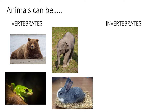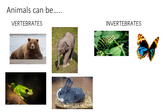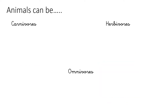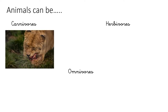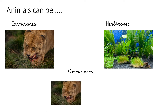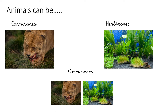Or they can be invertebrates if they do not have a backbone, like the caterpillar, the butterfly, the bee, or the spider. Animals can be carnivores if they eat other animals, herbivores if they eat plants, and omnivores if they eat animals and plants.